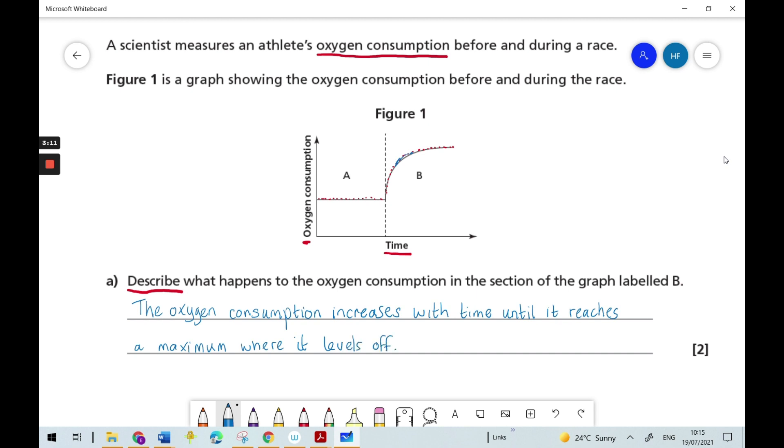OK, so we've got two marks. The first mark would be to identify the fact that the oxygen consumption increases, shown in this part of the graph here. And then the second mark would be for saying that until it reaches a maximum where it levels off, which is actually shown in this part of the graph here. So that's your second mark.